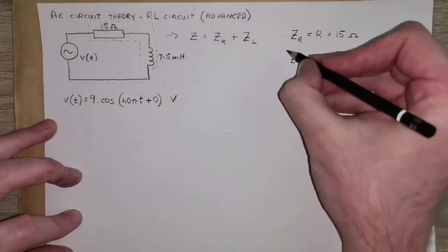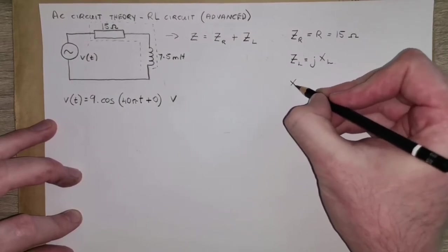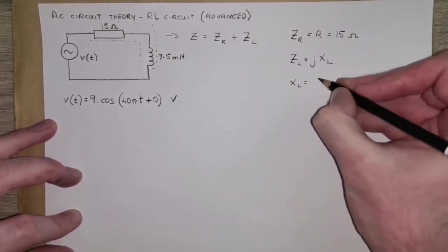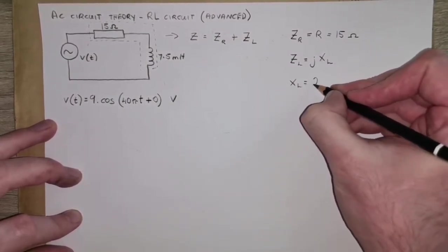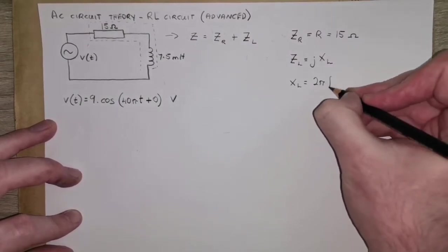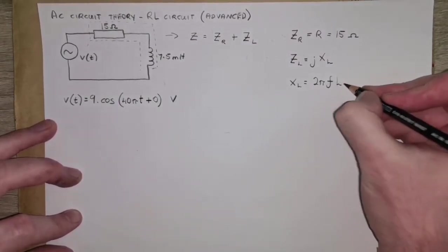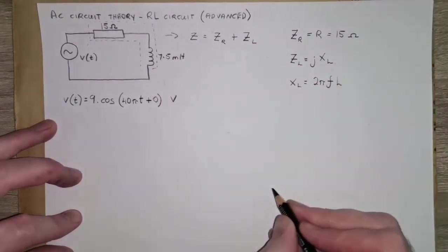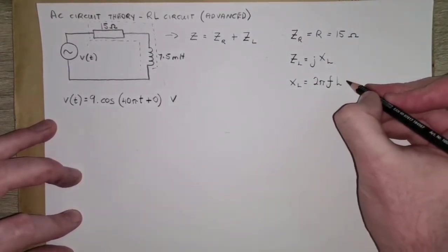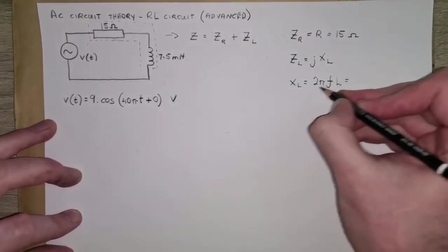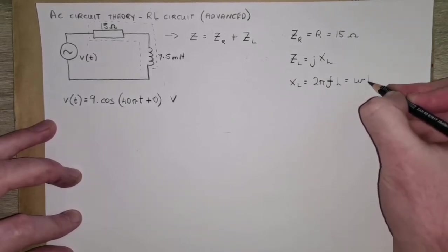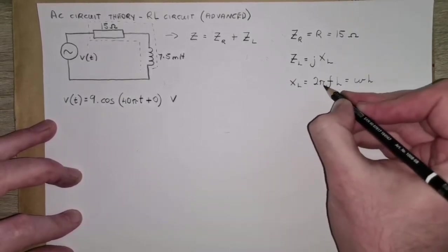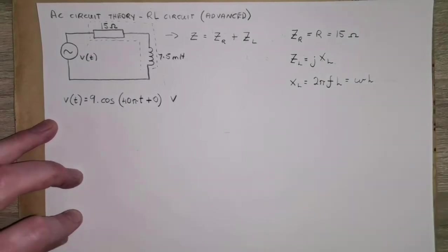And we would have seen as well that the inductive reactance depends on the frequency of the supply and the inductance of the inductor. Another way we can actually write that is omega L, because frequency times 2 pi is frequency in radians per second, which is omega.